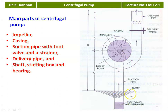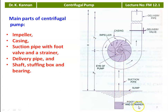At the bottom of the suction pipe, we have a foot valve and a strainer. The foot valve is a one-way valve — it allows water only in the upward direction and will not allow water to flow back towards the sump. The strainer is a filter which prevents the flow of solid particles or any substance other than liquid from entering the pump.